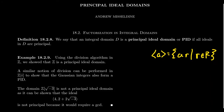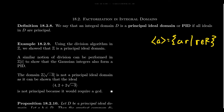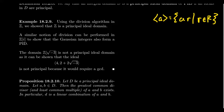Have we seen principal ideal domains? Yes, we have. The poster child of a principal ideal domain is the integers, which, using the division algorithm, we've argued that every ideal in the integers has to be a principal ideal. A similar argument can also be used to show that the Gaussian integers Z adjoined the imaginary unit i also form a principal ideal domain.